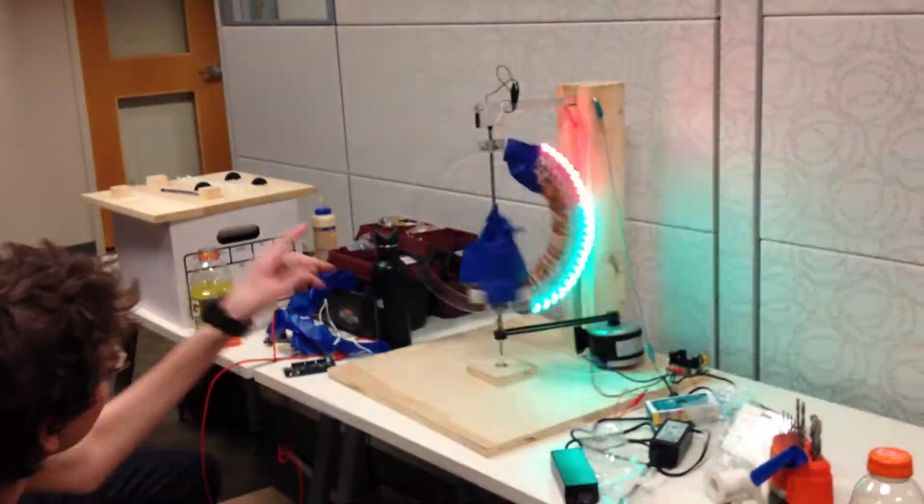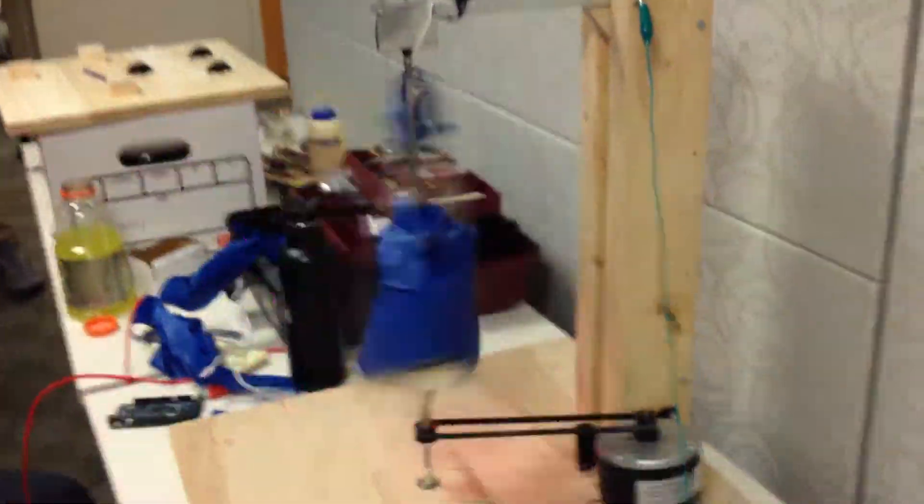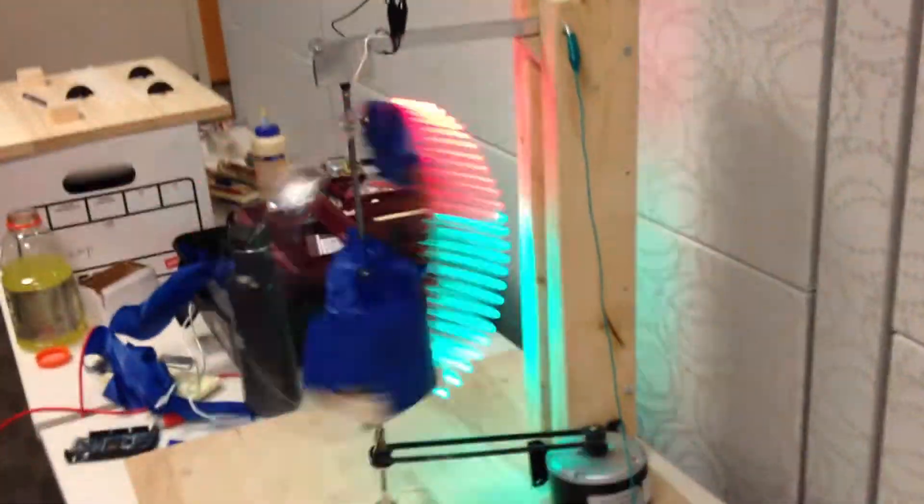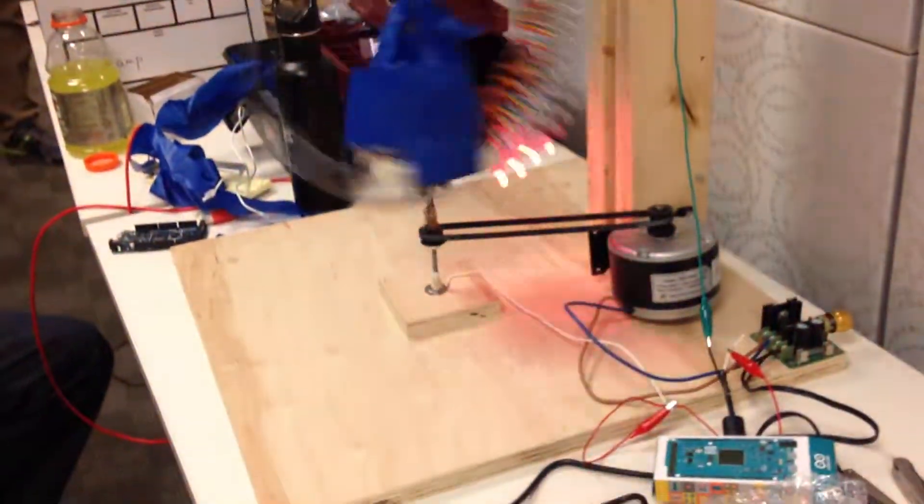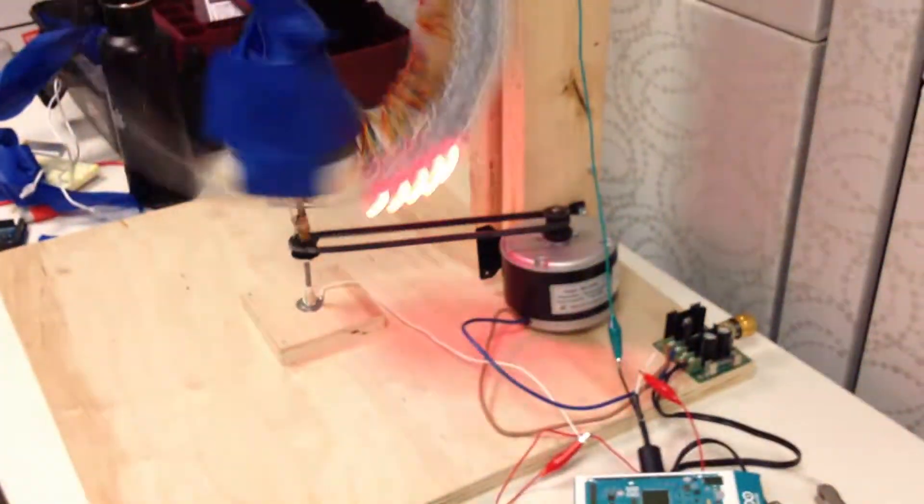Also, that little squeak is going to be addressed by the conductive grease at the top. But overall, this is a good prototype. We show that we can actually control the LEDs using the microcontroller, we can pass the voltage, we can control the motor, and we can spin it up to speed.